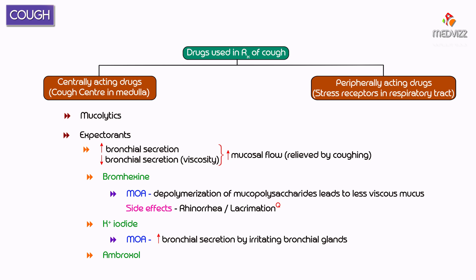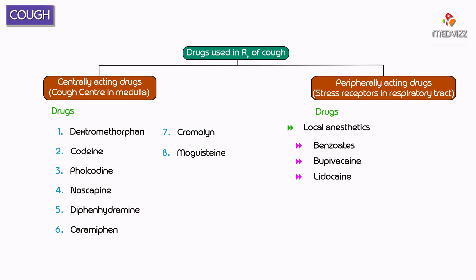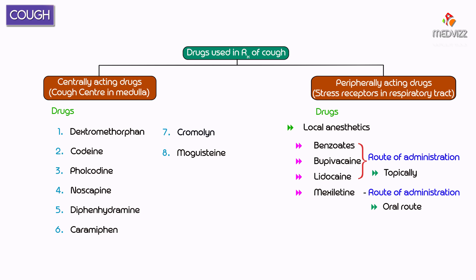Peripherally acting antitussive drugs include local anesthetics. Benzoate, bupivacaine, and lidocaine are given topically, while mexiletine is given by the oral route and mainly has peripheral action. These are the peripherally acting antitussives and the important points of drugs used in the treatment of cough.